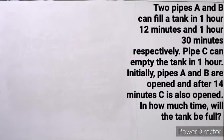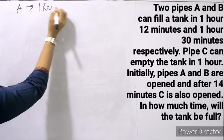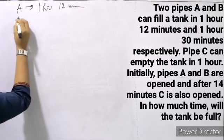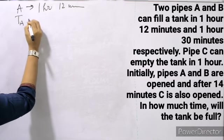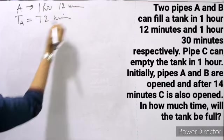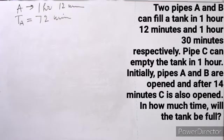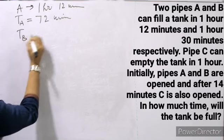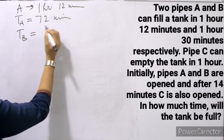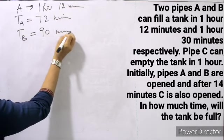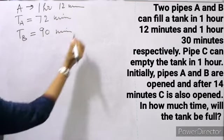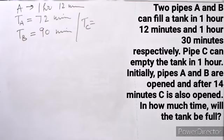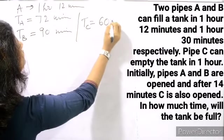Two pipes A and B can fill a tank in 1 hour 12 minutes and 1 hour 30 minutes respectively, so time A = 72 minutes and time B = 90 minutes. Pipe C can empty the tank in 1 hour, so time C = 60 minutes. Initially pipes A and B are open, and after 14 minutes C is also opened. In the first 14 minutes, only A and B are open, and the part of tank filled in 1 minute is 1 upon 72 plus 1 upon 90.